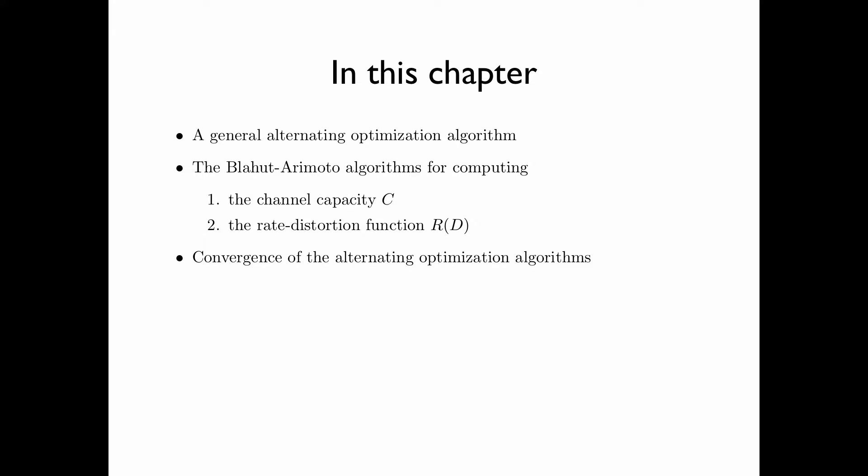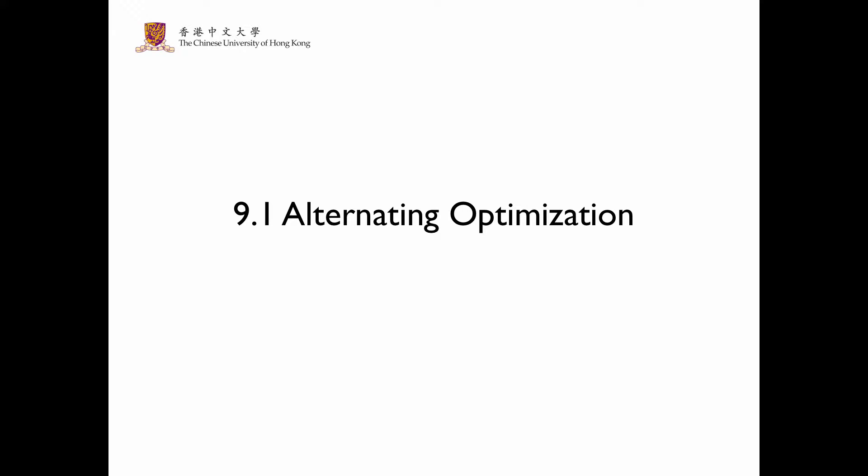And then we will discuss the convergence of the alternating optimization algorithms. In section 9.1, we consider a general alternating optimization algorithm.